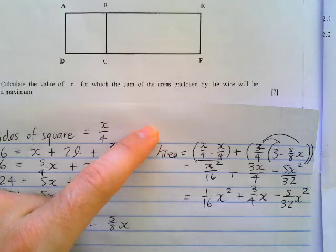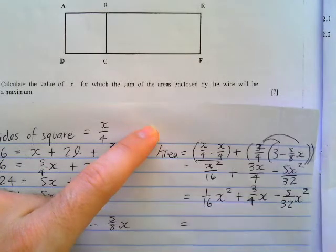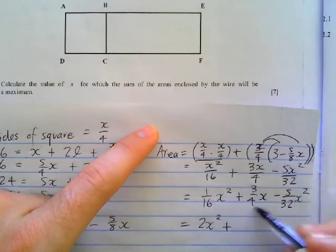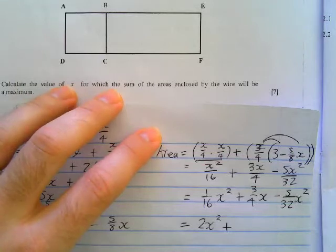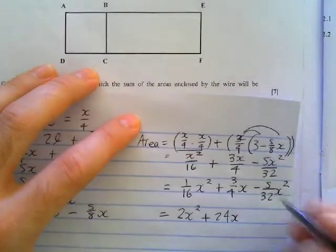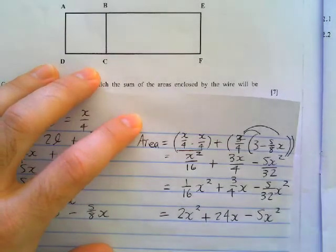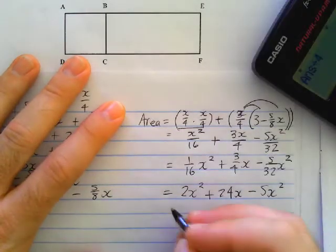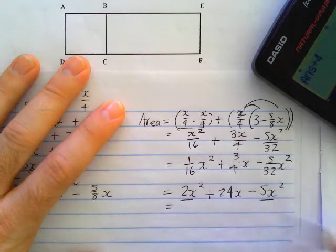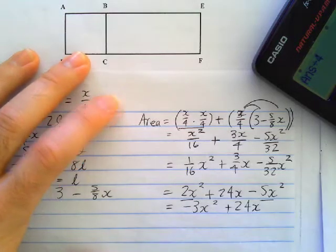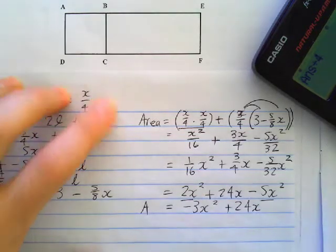At this stage, I could times everything by 32. If I times everything by 32, I'm going to get 32 over 16, so that's going to be 2X squared. If I times that term there by 32, I'm going to get 32 times 3, which is 96. And if I divide by the 4, I'm going to get 24X. And then if I times this by 32, I'm going to get minus 5X squared. Just before we go into the first derivative now, I can join my two like terms there. 2X squared minus 5X squared is negative 3X squared plus 24X. So there's an expression now that describes the area of my shape.